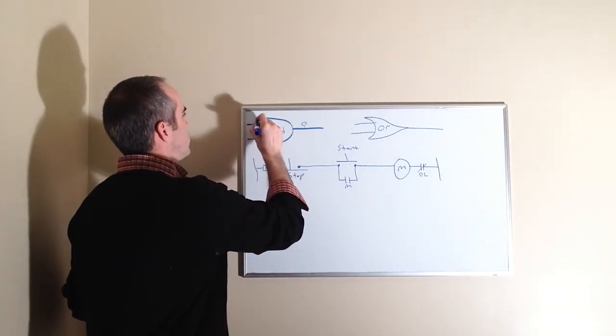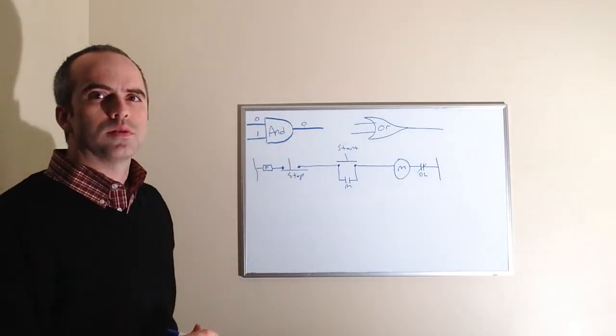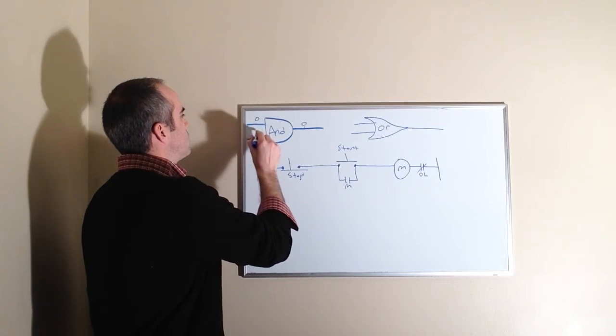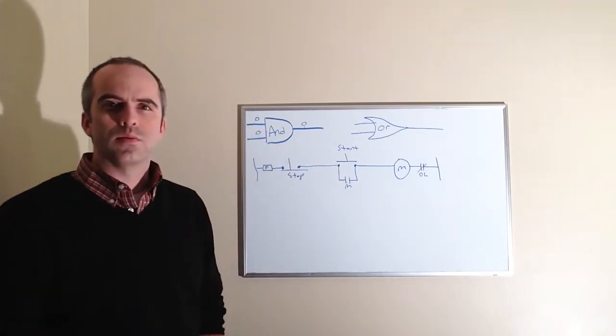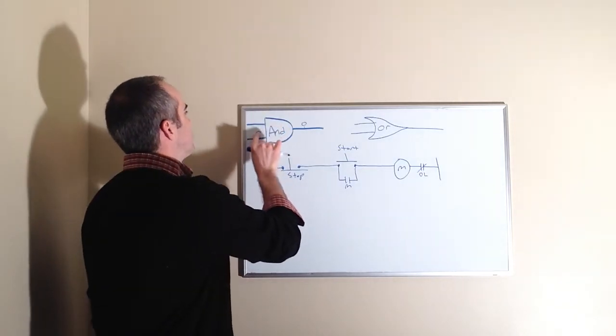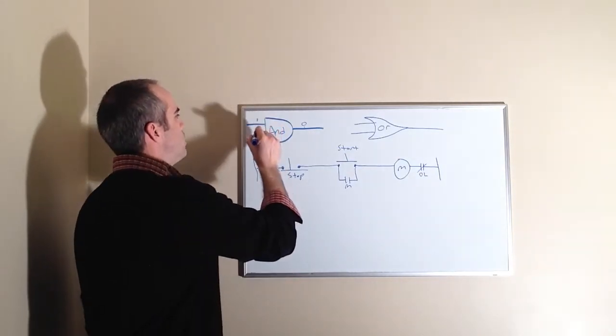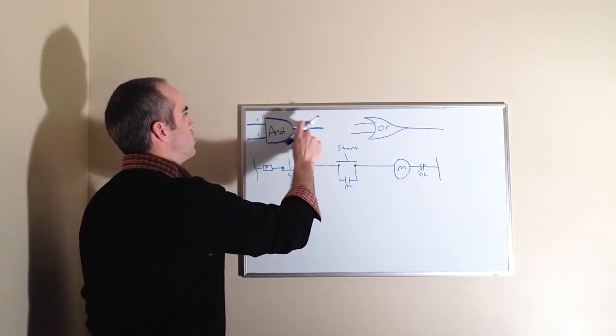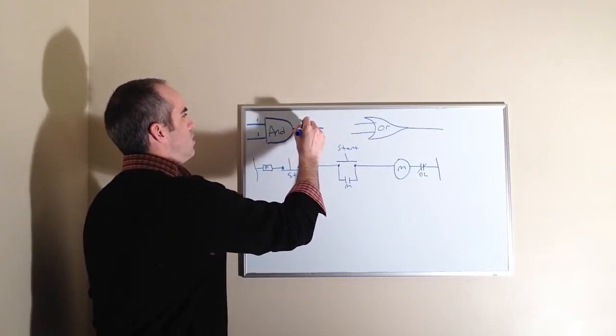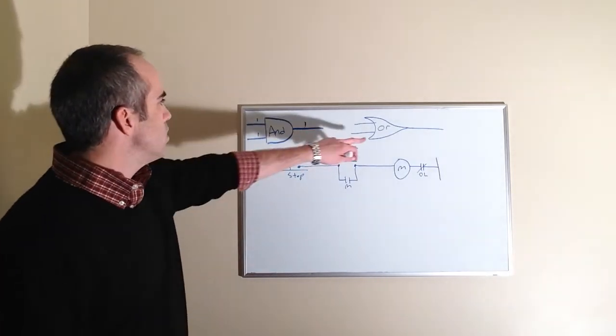And likewise if we just reversed it, a zero and a one would still equal a zero, and zero and a zero would equal a zero. So again, for this AND gate to produce an output, we need this input and this input to give us a one here.